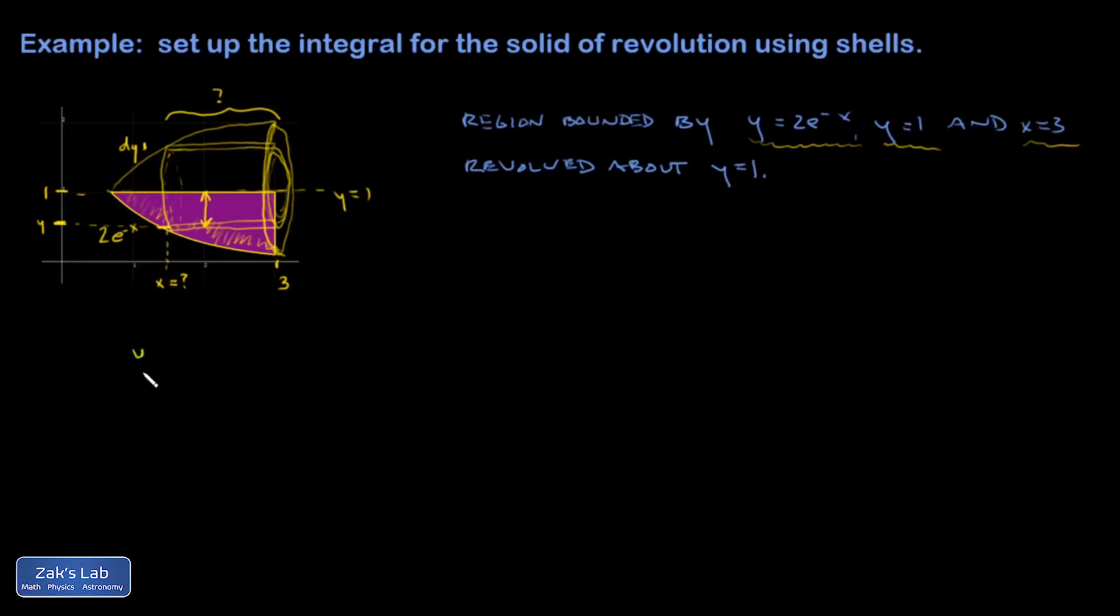So just as a little side note here, I had the curve y equals 2e to the negative x, and I need to solve this for x in order to figure out what that x coordinate is connected to this y coordinate. So I'm going to divide by two, take the natural log of both sides, solve for x, and I get that x is negative natural log y over 2.